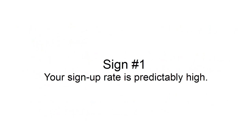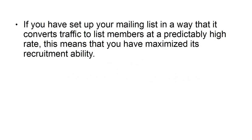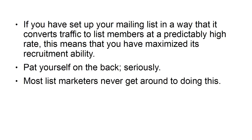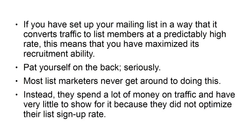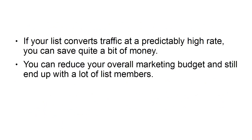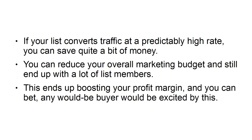Sign number 1: Your sign-up rate is predictably high. If you have set up your mailing list in a way that converts traffic to list members at a predictably high rate, this means you have maximized its recruitment ability. Most list marketers never get around to doing this and spend a lot of money on traffic with very little to show for it. If your list converts traffic at a predictably high rate, you can reduce your overall marketing budget and still end up with a lot of list members — this ends up boosting your profit margin and any would-be buyer would be excited by this.